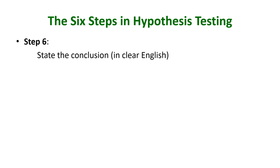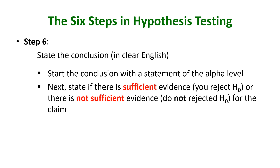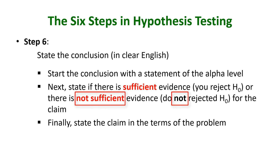Step six: you state the conclusion of the test. There are a couple of parts to include. First, begin with a statement of the alpha level you are testing at. Next, state whether there is sufficient evidence or there is not sufficient evidence for the claim. If you reject the null, there is sufficient evidence; if you do not reject the null, there is not sufficient evidence.